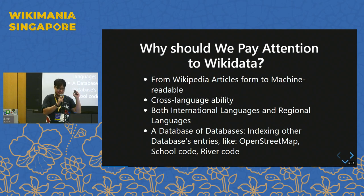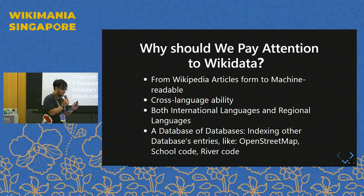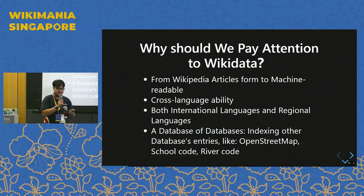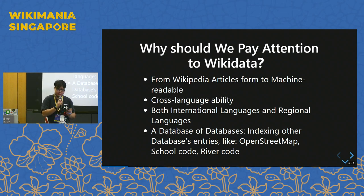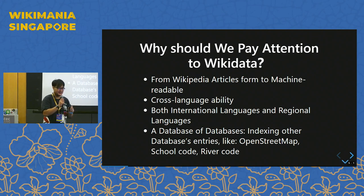I assume everybody in this room knows about Wikidata. And of course, Wikipedia — so why should we pay attention to Wikidata? It's not easy to understand, not easy to contribute to, but it has some features: it's more structured than Wikipedia, because Wikipedia is a human-readable form written in article form. So if you want to let a program or computer understand this rich form of knowledge, it should be machine-readable.